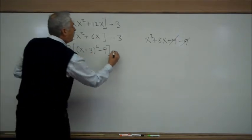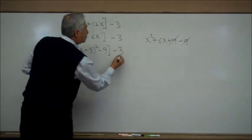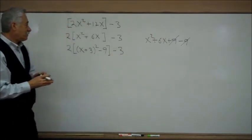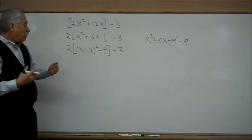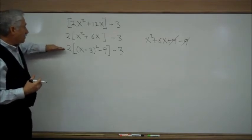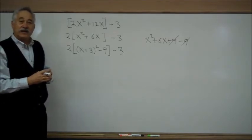Okay? We keep going. The minus 3 is still an orphan. It still sits outside the brackets. At this point, now that we have finished completing the square, we still need to clean up.